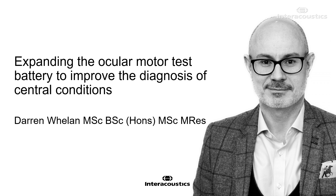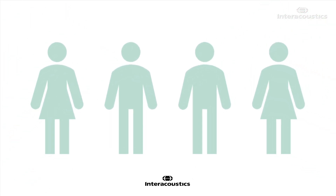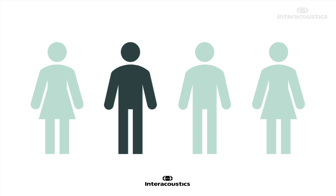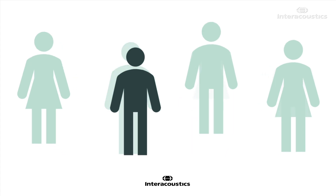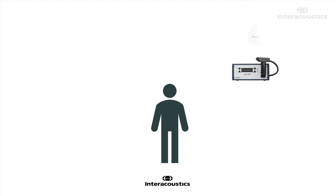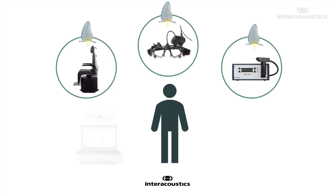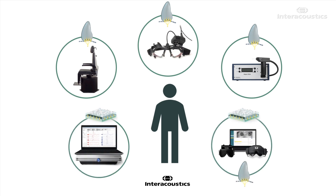When we're considering what options we have to examine central changes in VNG, the question comes of why we may be interested in looking at that when traditionally we're considering peripheral vestibular involvement. Epidemiological studies show that about 25% of patients presenting for specialist assessment may have some central nervous system involvement. It becomes quite important to have tools available to quantify changes and enable successful identification, management, and treatment of those conditions.